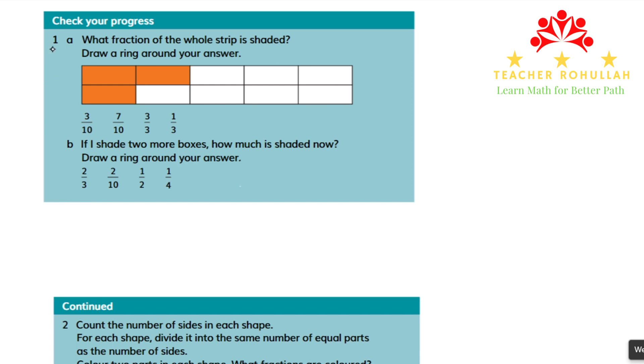Question one says, what fraction of the whole strip is shaded? Draw a ring around your answer. We see that the shape has 10 equal parts: one, two, three, four, five, six, seven, eight, nine, ten. Out of ten, three of them are shaded. So the fraction that can be made from this shape is three-tenths.